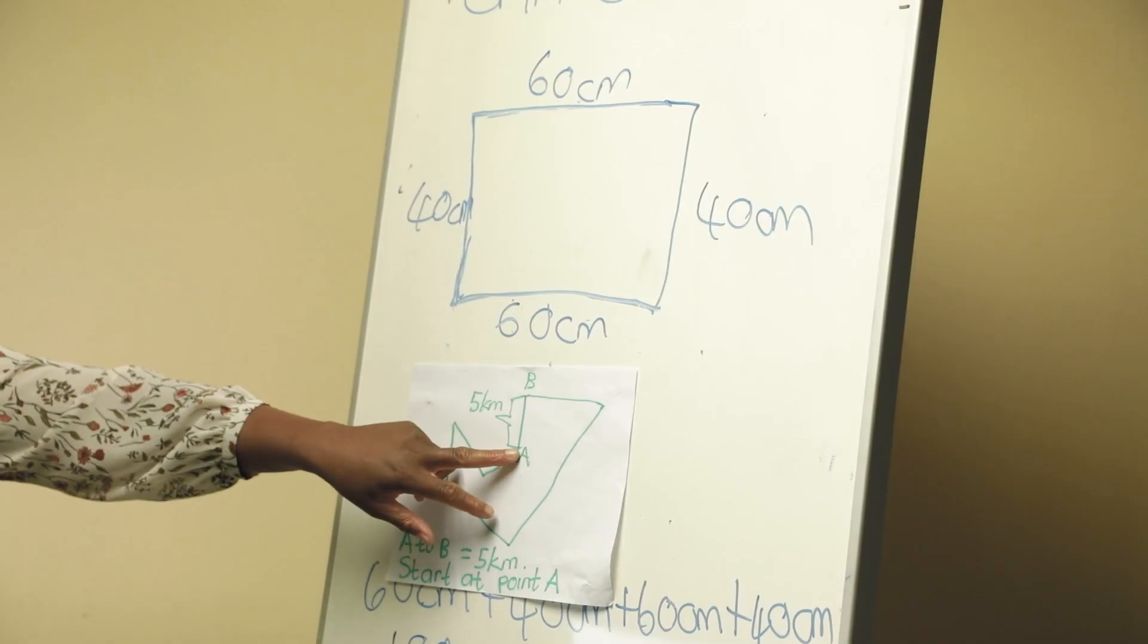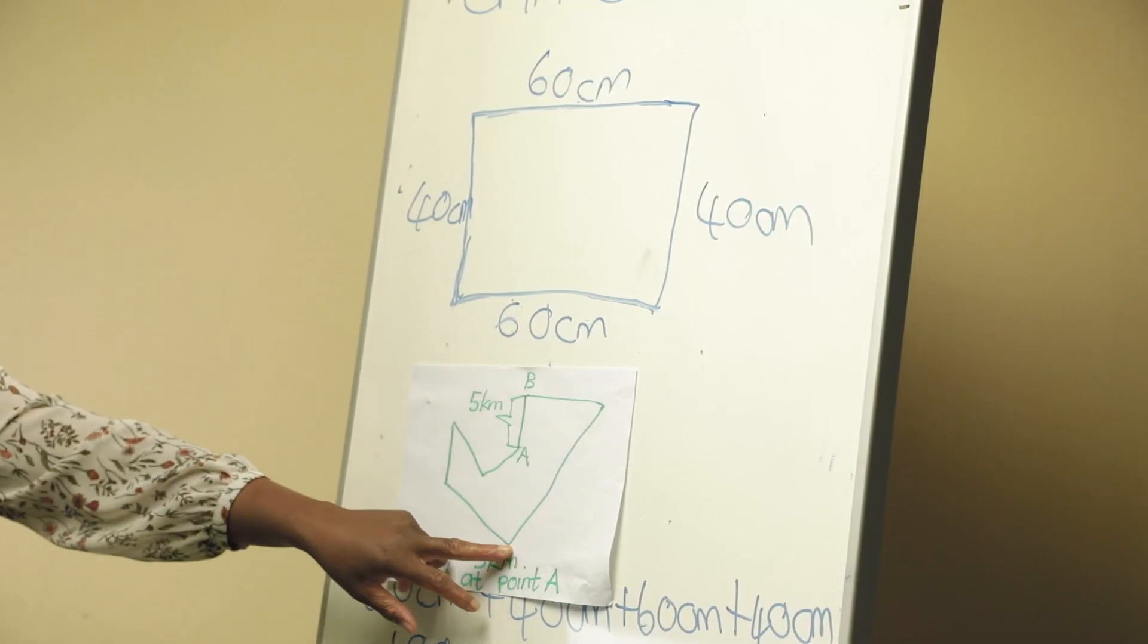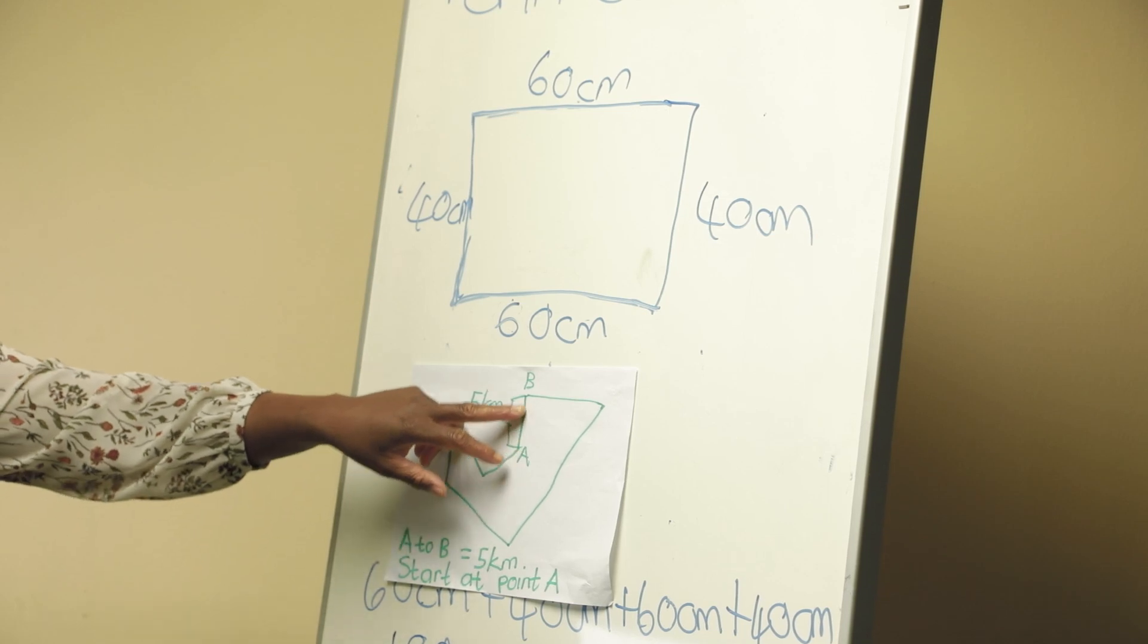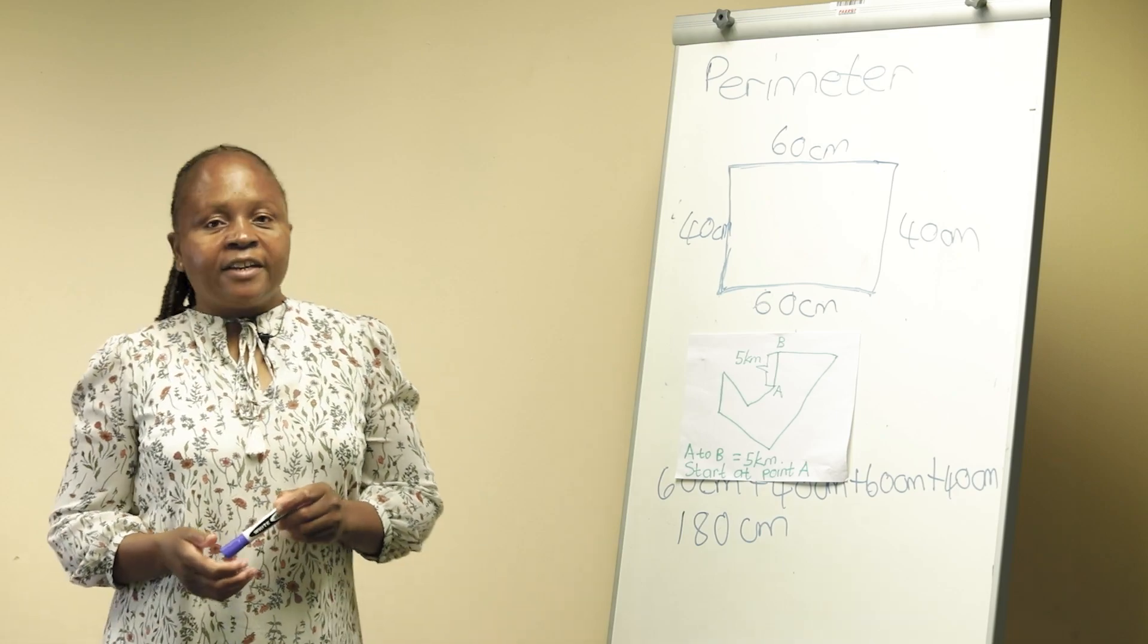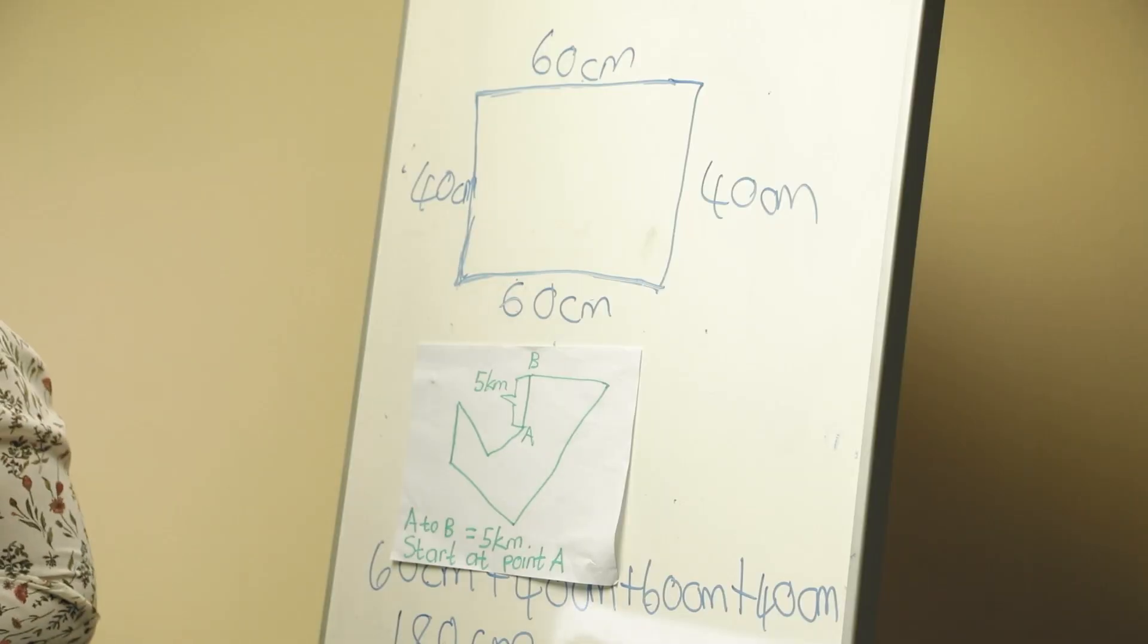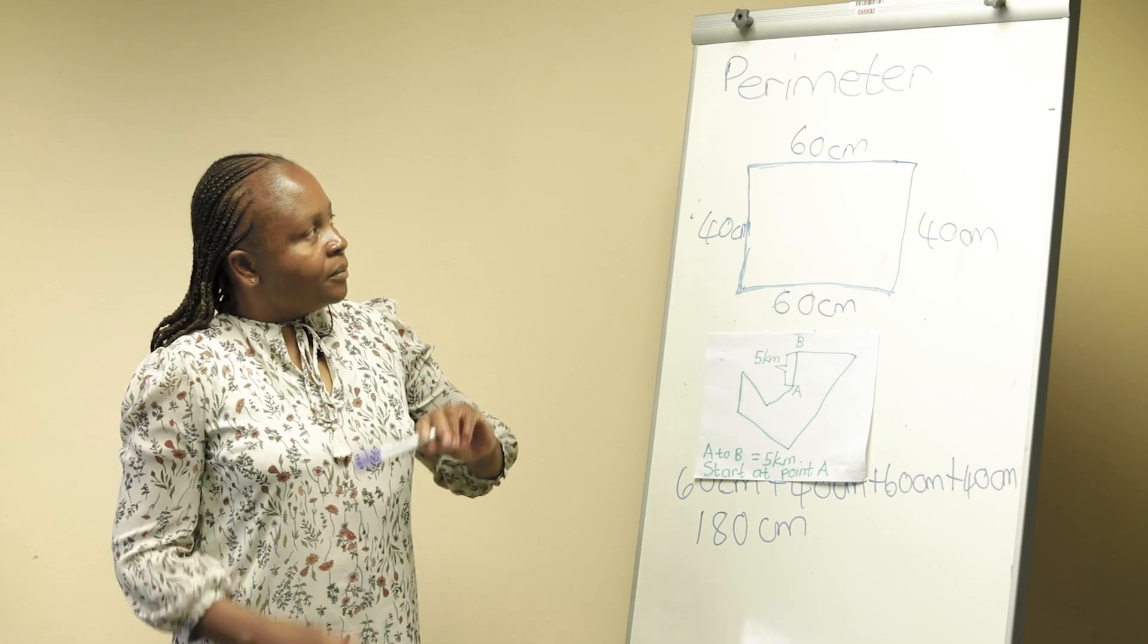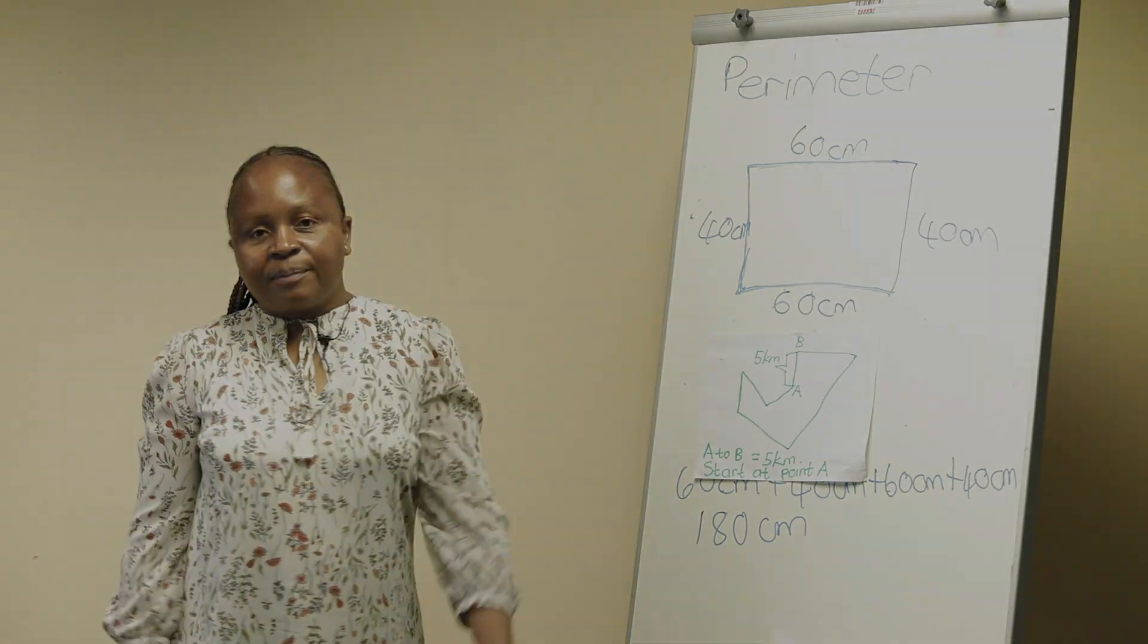Start at point A and measure right round our school garden. Learners, there are also some more activities to be done in your workbook for you to have more practice in calculating perimeter.